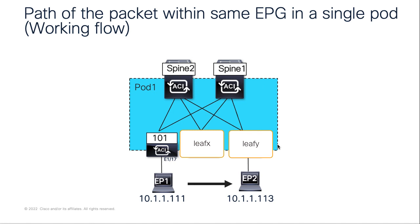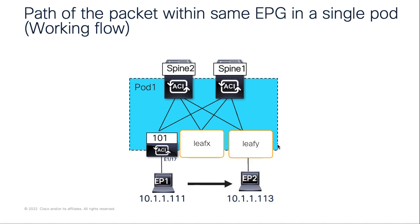For our understanding of this tool, we'll use a single pod topology consisting of three leaves and two spines for a quick test. We have two endpoints in the same EPG. Endpoint 1 is connected to leaf 101 on port ETH 1/17, and endpoint 2 is connected to the fabric, but you are not aware of its exact connectivity point. You want to trace the path of the packet between endpoint 1 and endpoint 2 within the fabric.